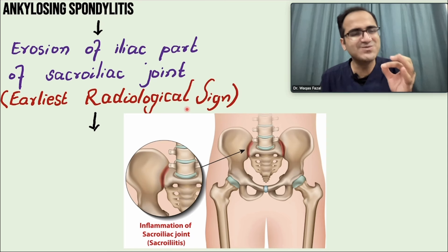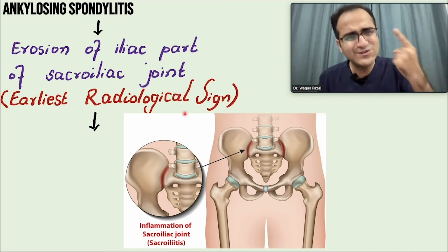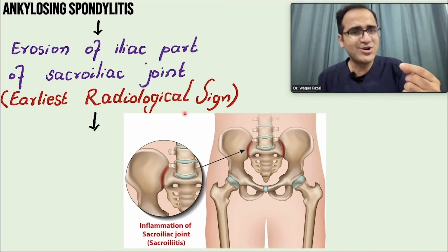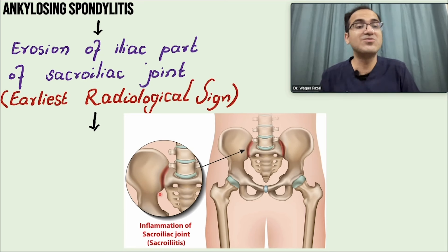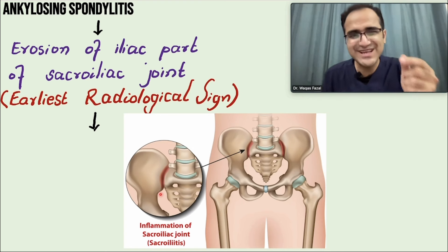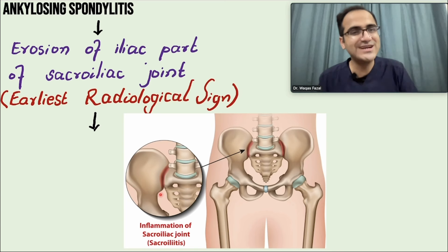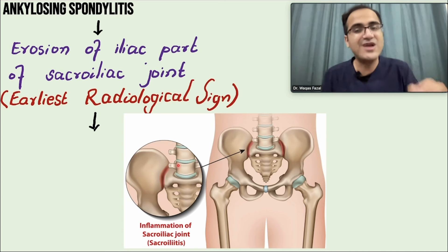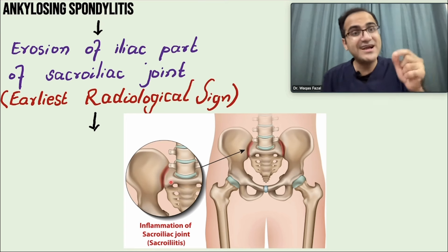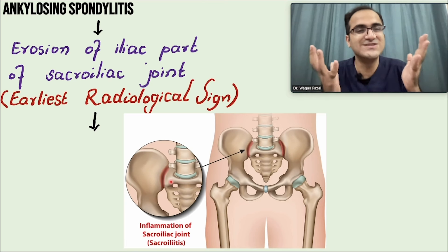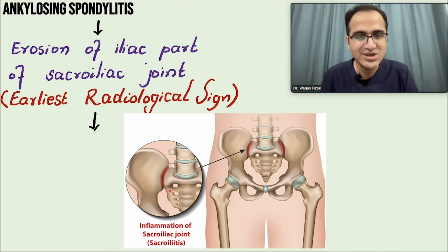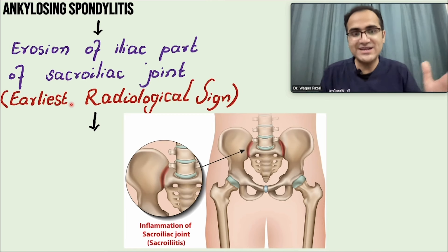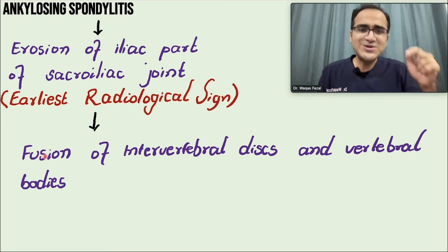The most important joint involved in ankylosing spondylitis is the sacroiliac joint - between the sacrum and iliac bone. This joint is inflamed and damaged, so the first sign is tenderness over the sacroiliac joint. This is also the joint assessed on X-ray for diagnosis, since antibody tests - rheumatoid factor and anti-nuclear antibodies - come out negative.